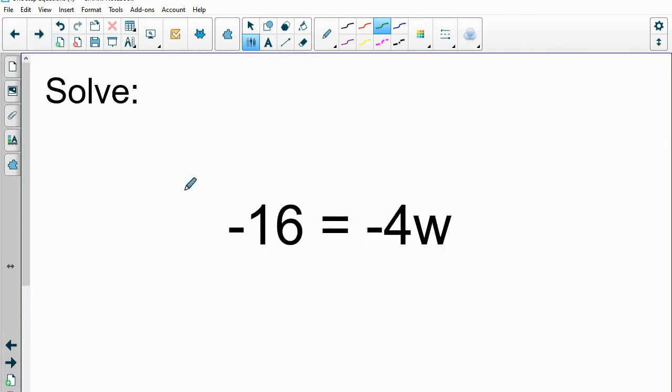The next one, we've got -16 = -4w. So we've got the variable on the right side, so that's the number we're going to look at to figure out what to do. So we're multiplying by -4. In order to solve this one, we're going to divide by -4. And we've got to keep in mind our understanding of integers. A negative divided by a negative is positive, and 16 divided by 4 is 4. So in this particular case, w is 4.